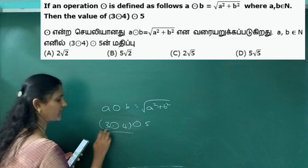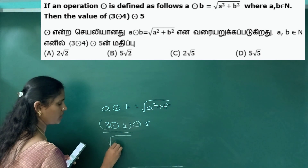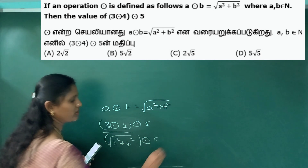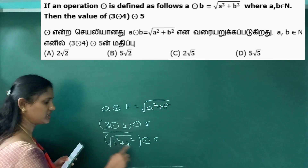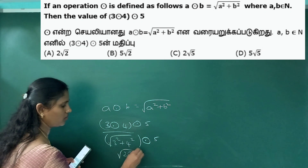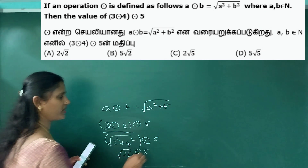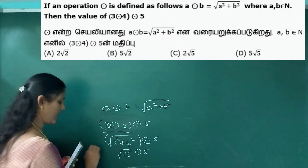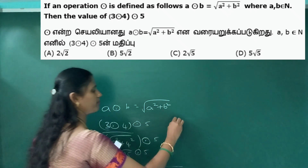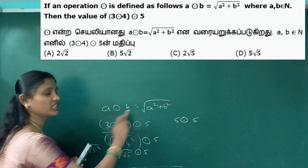First solve it using the format. Square root of 3 squared plus 4 squared. 9 plus 16 is 25. Square root of 25 is 5. So three circle four equals 5.